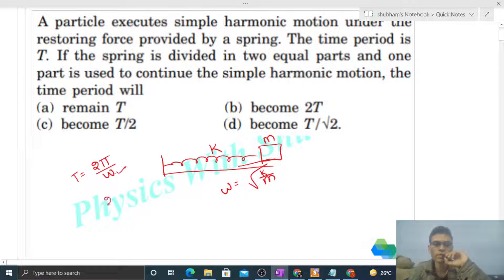Now if I put the value of ω here, you will get 2π under root of m by k, right?